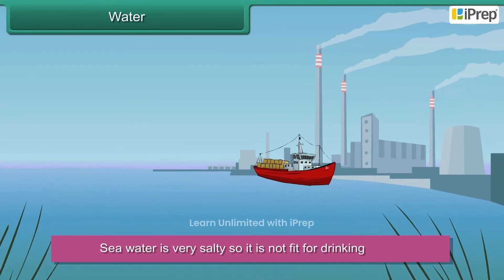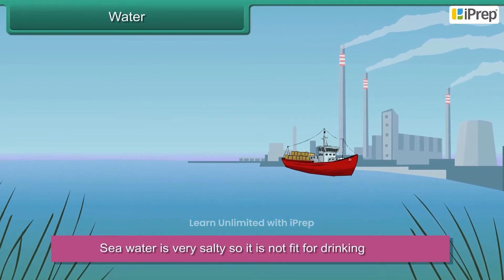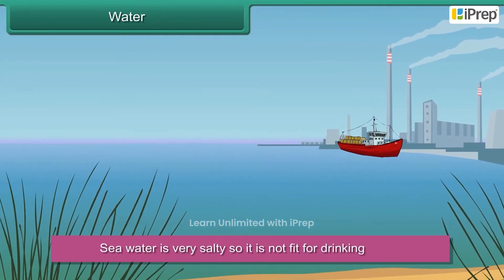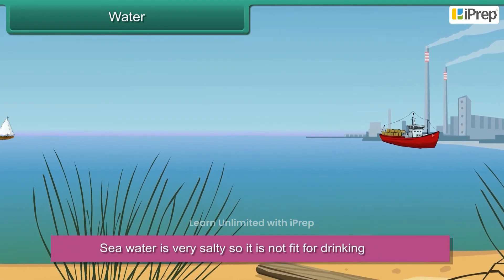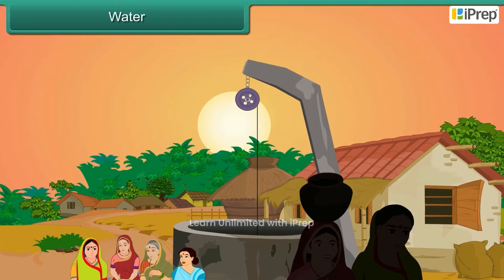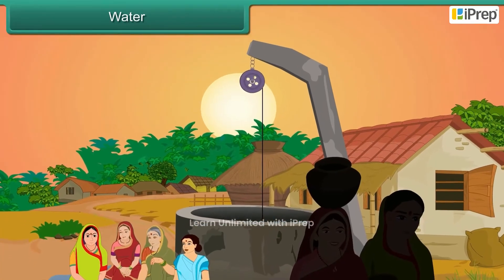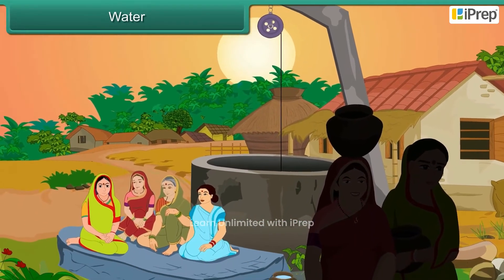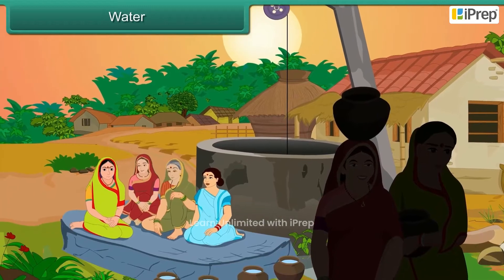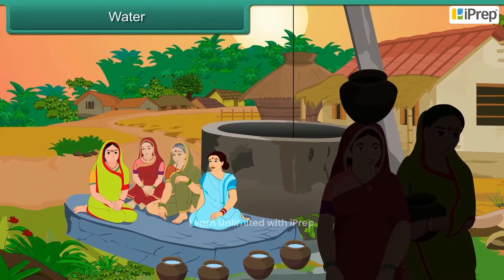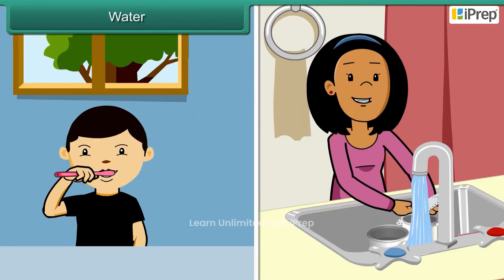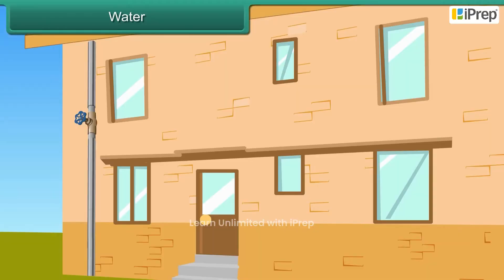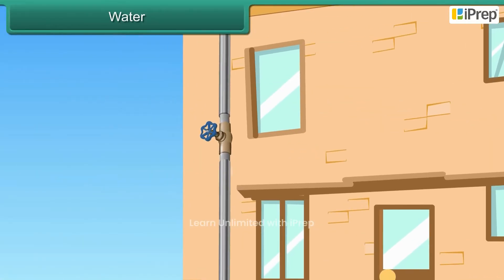Seawater is very salty, so it is not fit for drinking. In villages, people dig wells to draw the underground water. In cities, water reaches our houses through underground pipes.